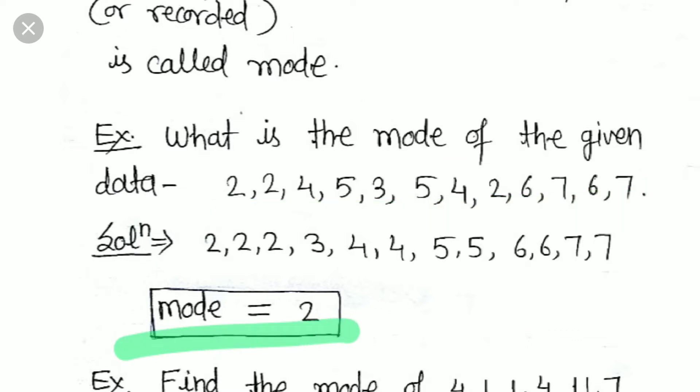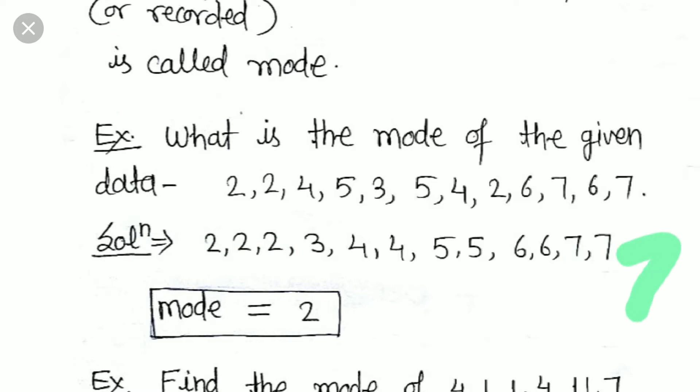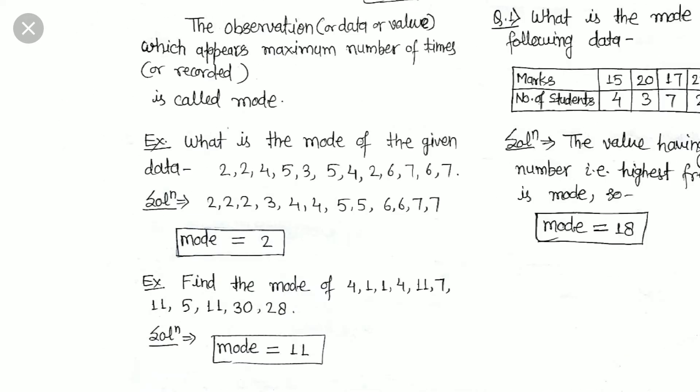Sometimes it may happen that two values appear an equal number of times. For example, if 2 appears 3 times and 7 also appears 3 times, then both 2 and 7 will be the mode. So this is the way to calculate mode — you just check the recorded data and see which value appears the maximum number of times.